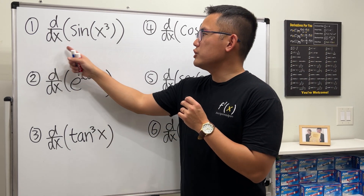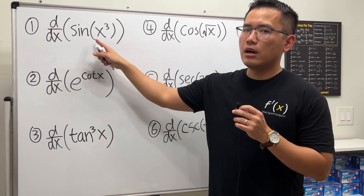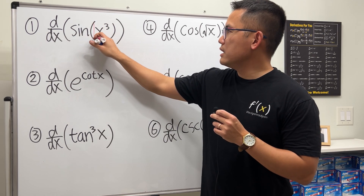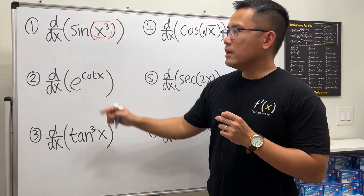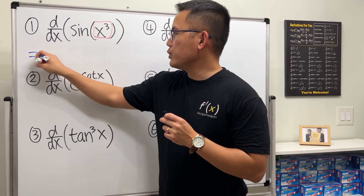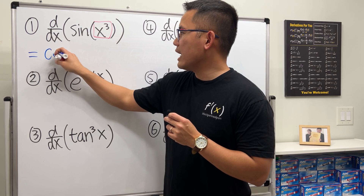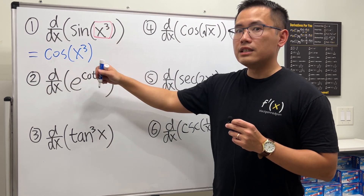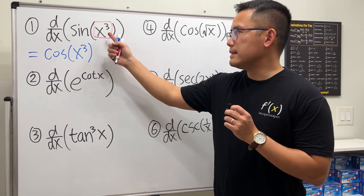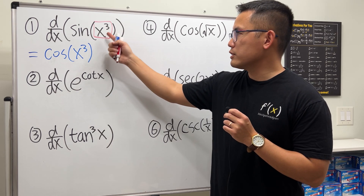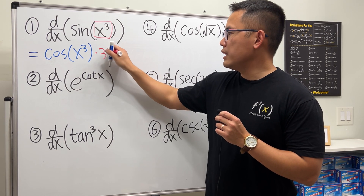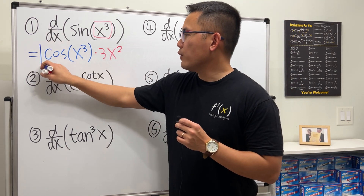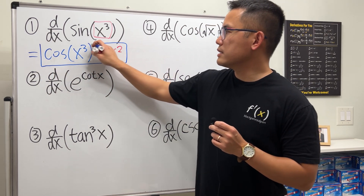For the first one, we will differentiate sine of x to the third power. We have sine, and x³ is the inner function. We differentiate sine to get cosine, the inner function stays, then use the chain rule and multiply by the derivative of x³, which is 3x².